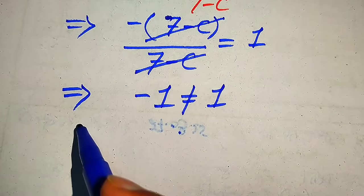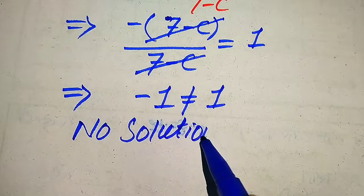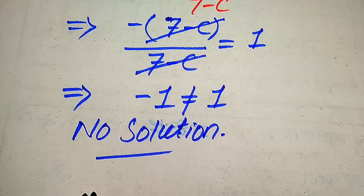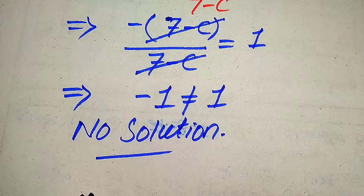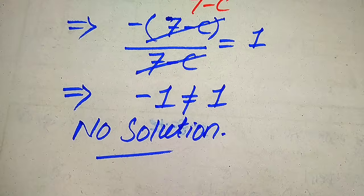Since both sides are not equal, we cannot find any value of c in the second method. So we finally conclude that this equation has no solution in general. In the first method we got c equals 7, but c equals 7 does not satisfy the given equation, so it is the extraneous root. This equation has no solution — that is our final conclusion and final answer. Thank you so much for watching this video. Please subscribe to my channel for more exciting videos.